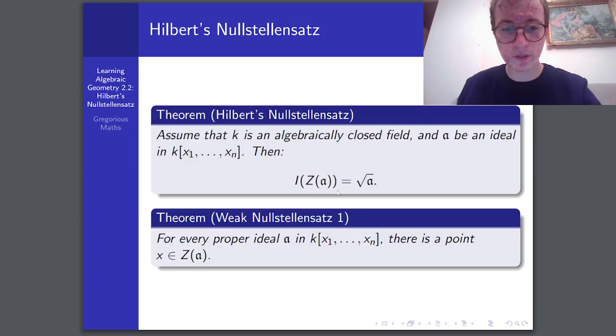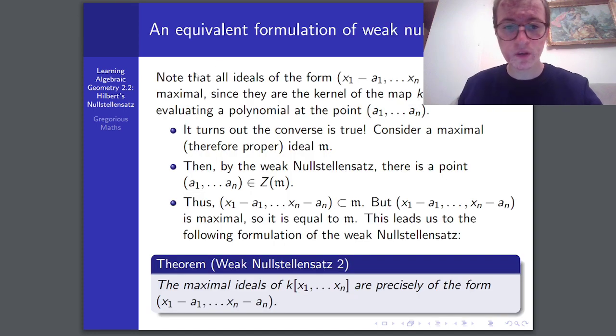And in fact, what we're going to try and look at is the maximal ideals of this polynomial ring. So, firstly, note that all ideals of this form here are maximal. Because they are the kernel of this map here, which is a surjection. And so, when you mod out k of x1, etc., by these ideals, you get k. And that's a field, and so, obviously, that is a maximal ideal. And, obviously, this map is just evaluating a polynomial at this point here.